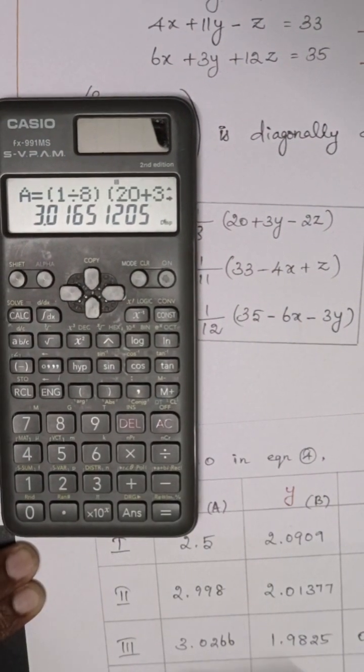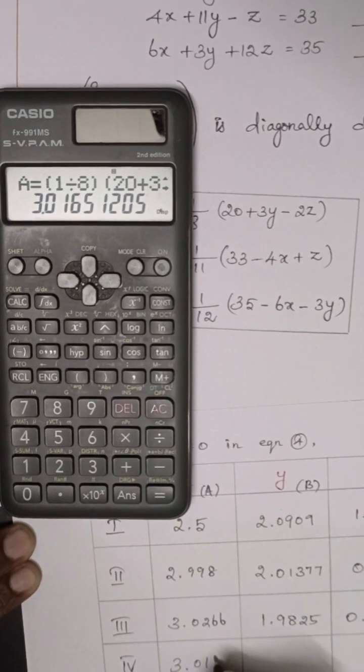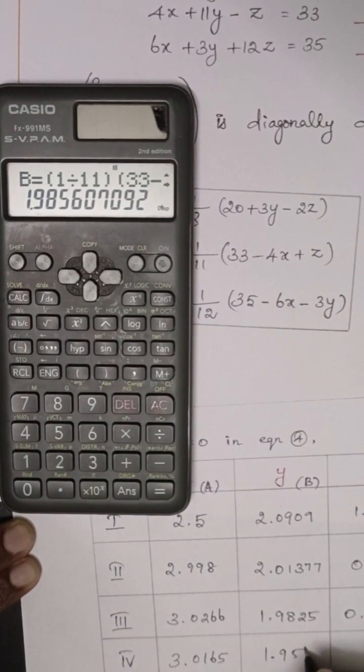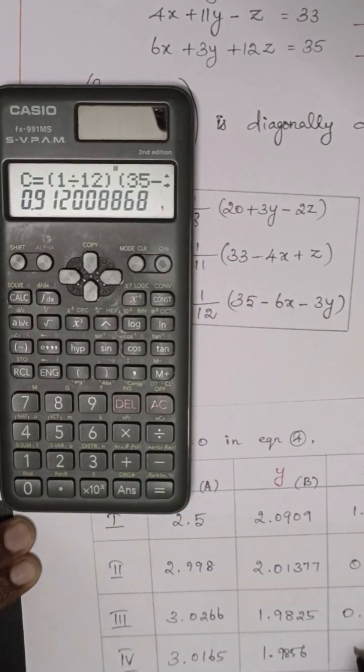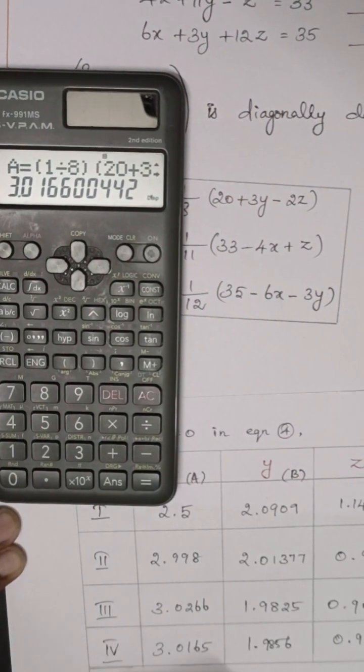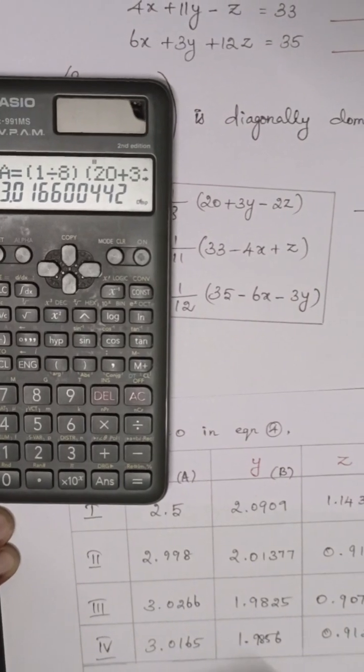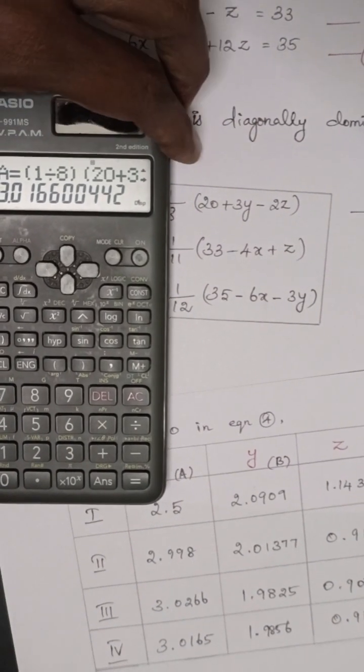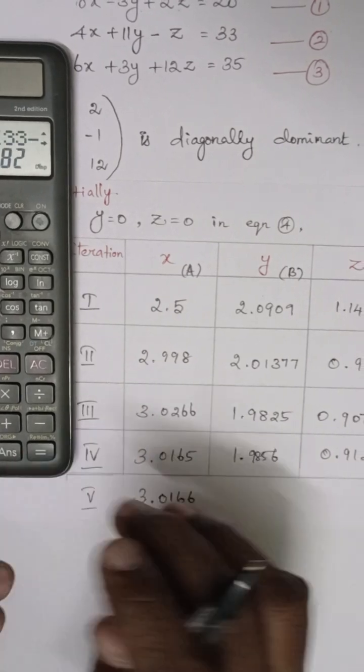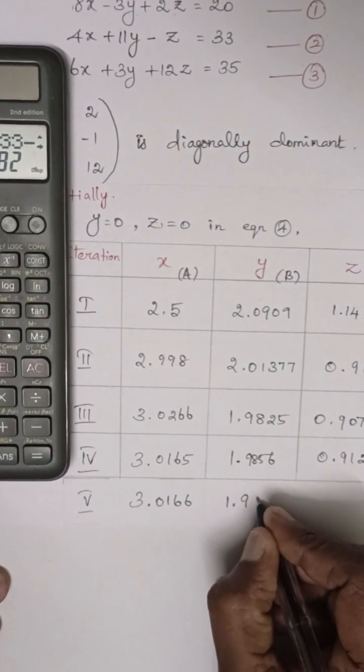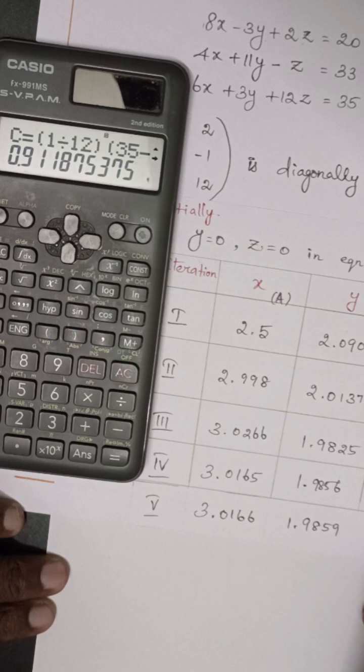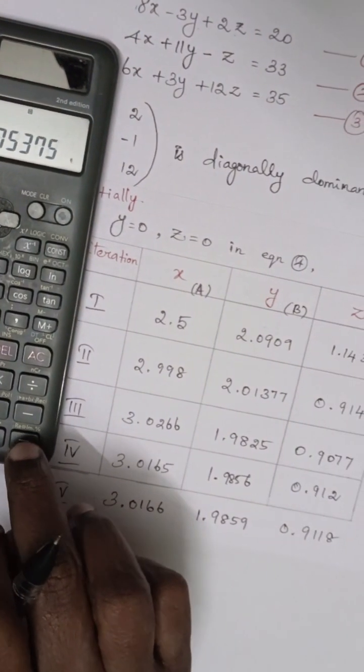Next, another one. This is fourth iteration: 3.0165, 1.9856, and 0.912. Next, fifth iteration: 3.0165, 1.9856. Then b value is 1.9859, then c value 0.9118.